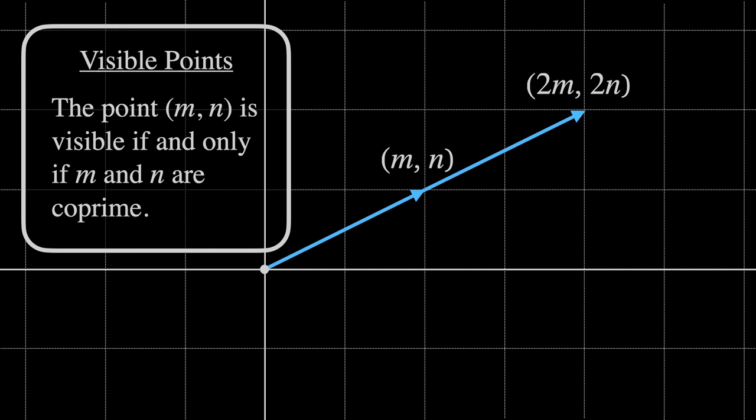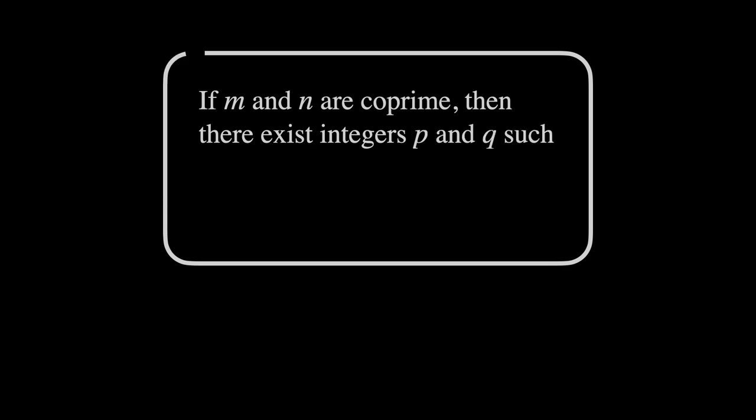And the reason I'm telling you this is because we're going to use this really nice fact about coprime numbers. If M and N are coprime, then there exist integers P and Q such that PM + QN equals 1.